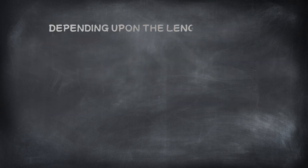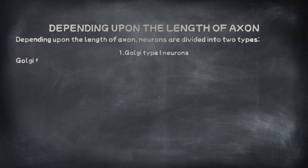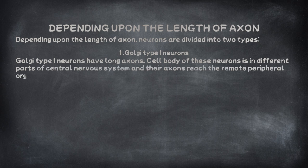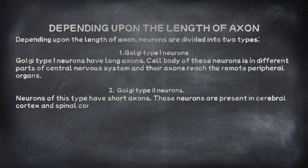Depending upon the length of the axon, neurons are divided into two types. 1. Golgi type I neurons have long axons — the cell body is in different parts of the central nervous system and their axons reach remote peripheral organs. 2. Golgi type II neurons have short axons, and these neurons are present in the cerebral cortex and spinal cord.